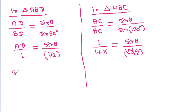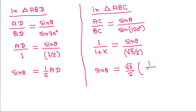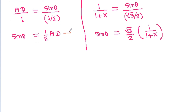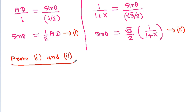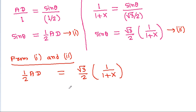From equation 1: sin(theta) equals (1/2) AD. From equation 2: sin(theta) equals (√3/2) times 1 by (1 + X). Setting them equal: (1/2) AD equals (√3/2) times 1 by (1 + X), so AD equals √3 by (1 + X).